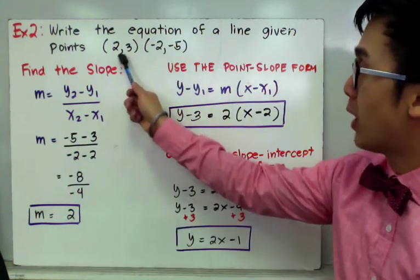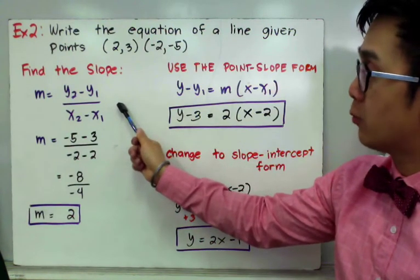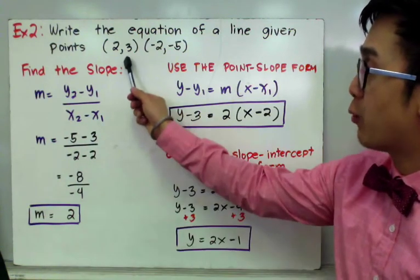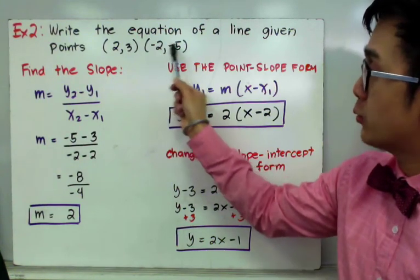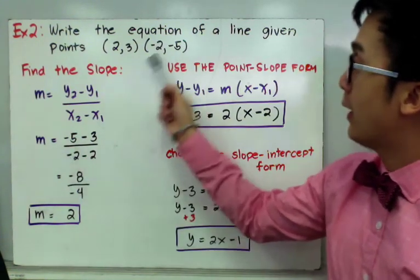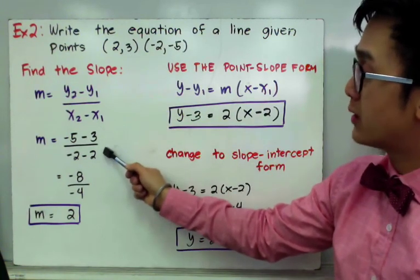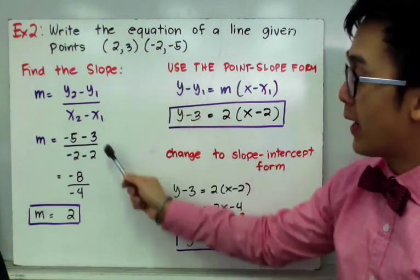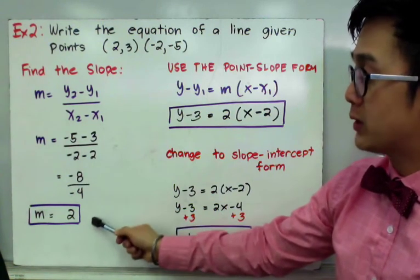If I have point 1 and point 2, using the formula for slope — y-sub-2 minus y-sub-1 all over x-sub-2 minus x-sub-1 — and labeling my x's and y's, my first point will be x1 and y1, and my second point will be x2 and y2. By direct substitution, m equals negative 5 minus 3 all over negative 2 minus 3, which simplifies to negative 8 over negative 4, equal to 2.